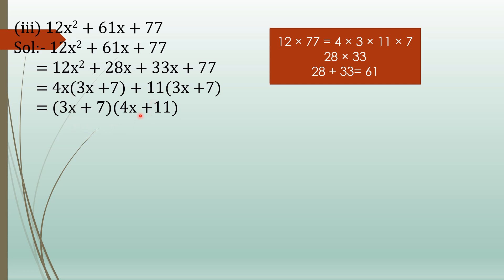So the factors are 3x plus 7 and 4x plus 11, which are the factors of the polynomial 12x² plus 61x plus 77.